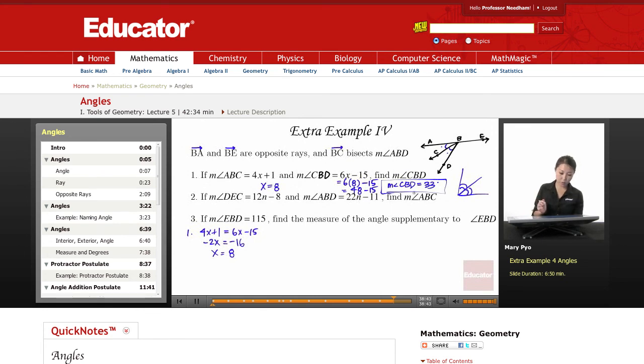Number 2. So measure of angle DBC is 12N minus 8. Measure of angle ABD, the whole thing is 22N minus 11. Find the measure of angle ABC. So they give you this whole thing right here, or they give you DBC, and they give you ABD. And they want you to find this angle right here.